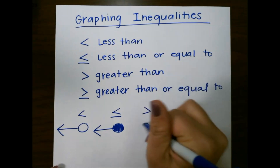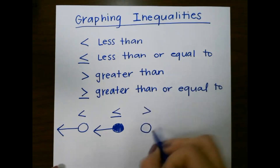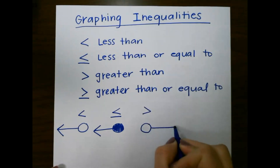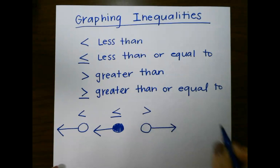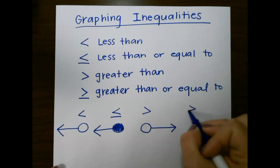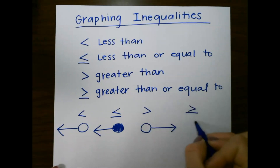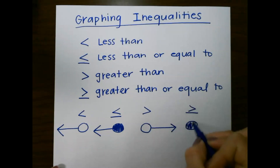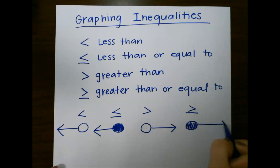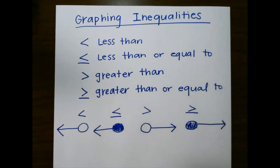Greater than is an open circle but shaded to the right, and greater than or equal to is going to be a closed circle and shaded to the right on our number line.